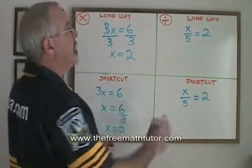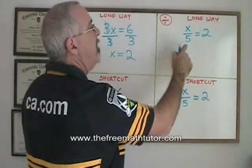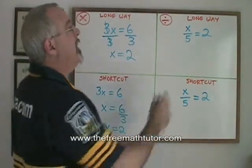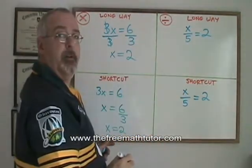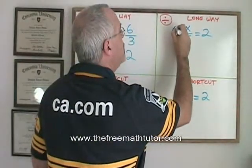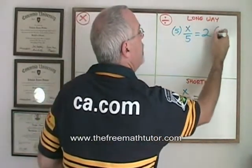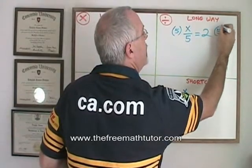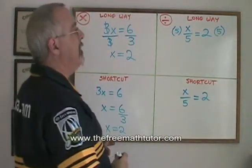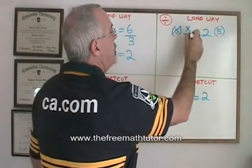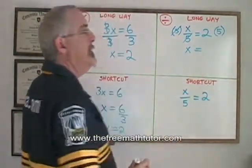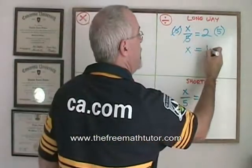With division, the long way, when I have x divided by 5 equals 2, I am dividing my x by a 5. So with the long way, I show that I am multiplying both sides of the equation by 5, because that is the opposite of dividing by 5. These 5s cancel, my x is isolated, and is equal to 2 times 5, which is 10.